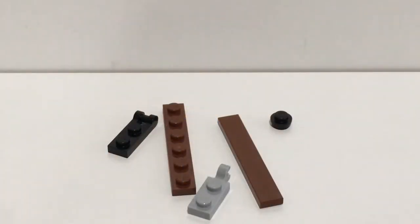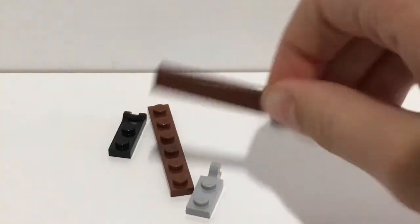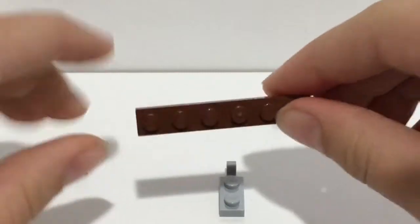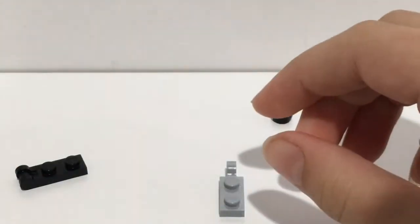So guys these are the pieces you will need for the build. You will need three of these 1 by 6 brown tiles. You'll need only one of these 1 by 6 brown stud plates.